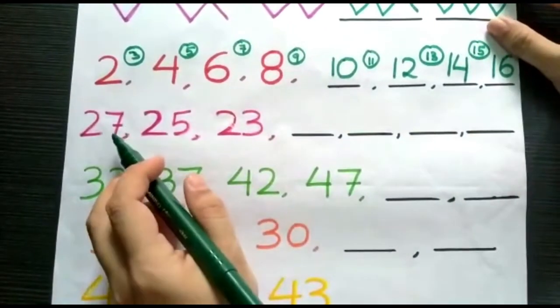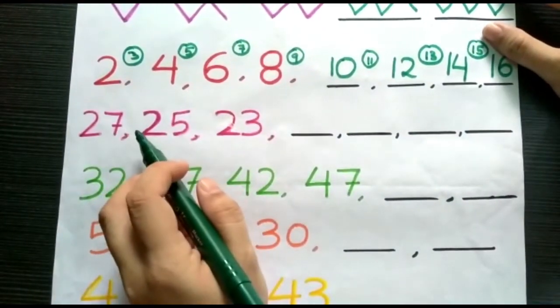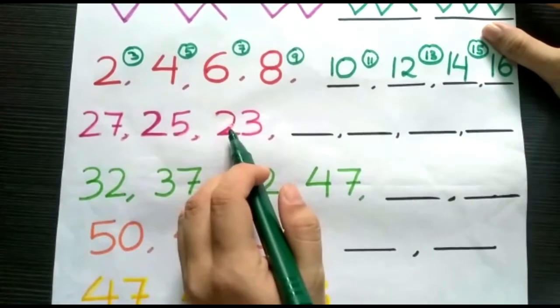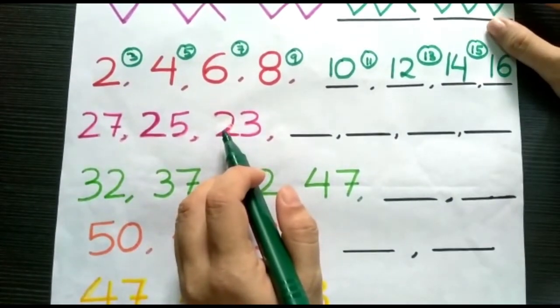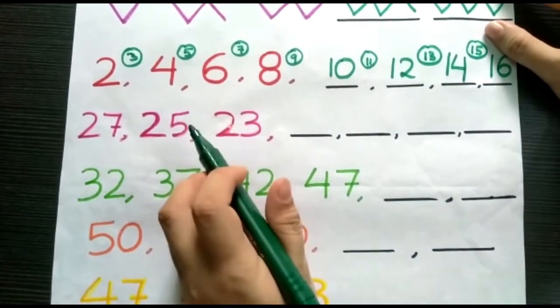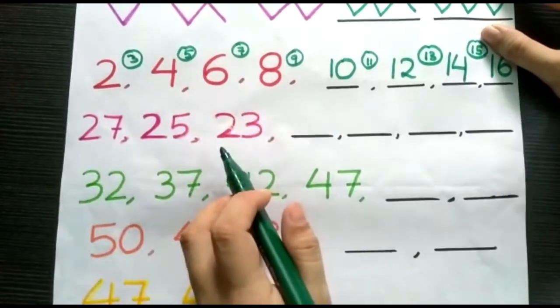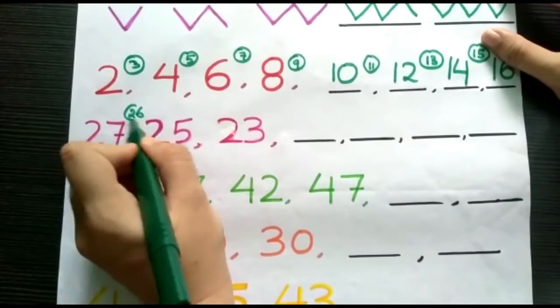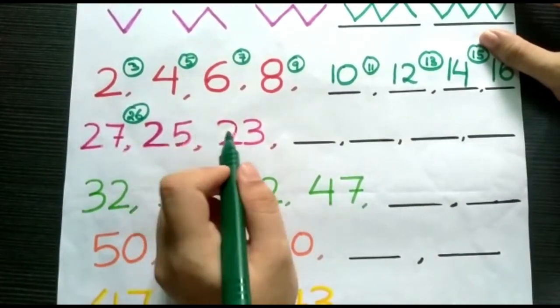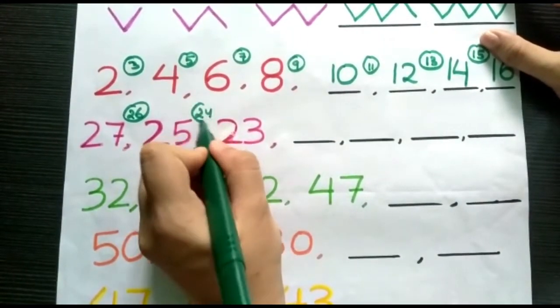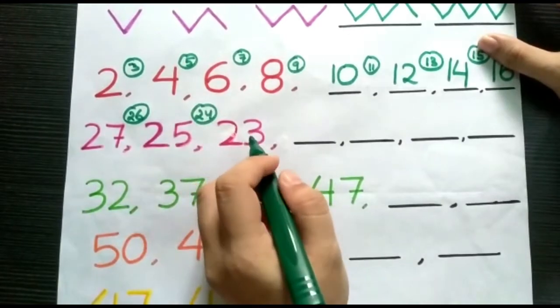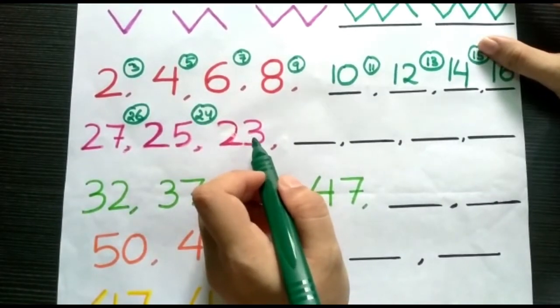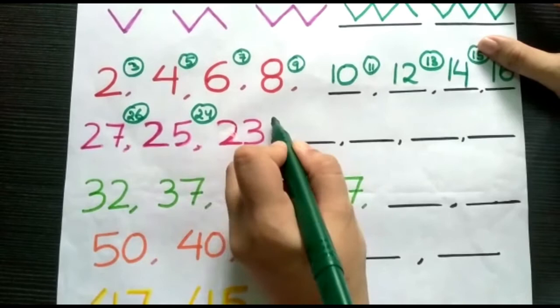Now, next we have 27, 25, 23, which means it is in a decreasing order or we can say backward counting. So, 27, 25. Here, 26 is missing. 25, 23. Here, 24 is missing. So, in the next pattern, we need to skip one number. That is 22.